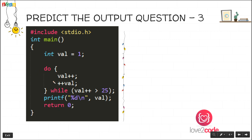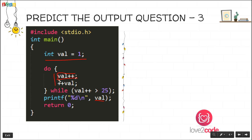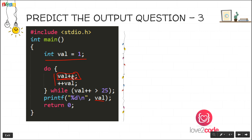The third question is based on pre-increment and post-increment operators, using a do-while loop. We want to find the final value of val. Initially val is 1. Since it is a do-while loop, the statements execute at least once. When we use the post-increment operator, the current value of val remains 1 during that line's execution, and after execution it becomes 2.